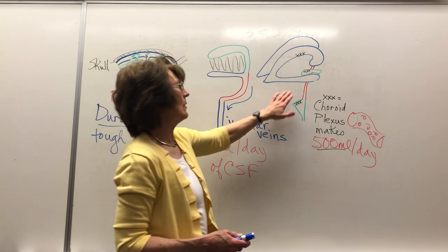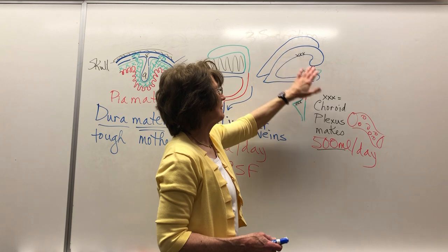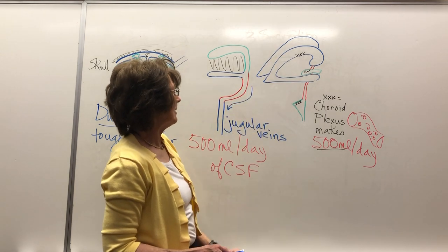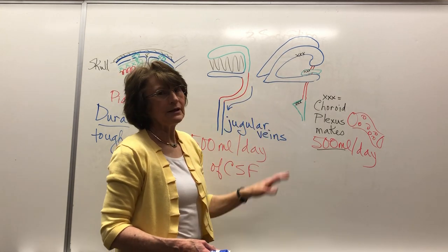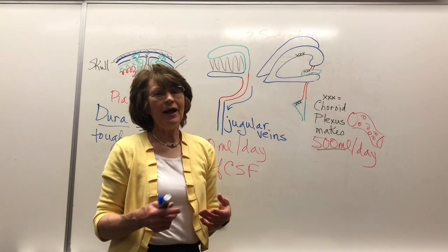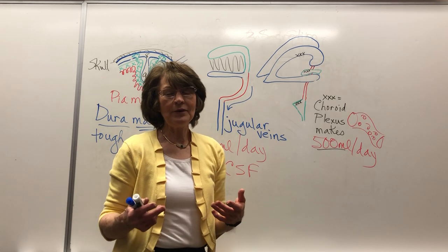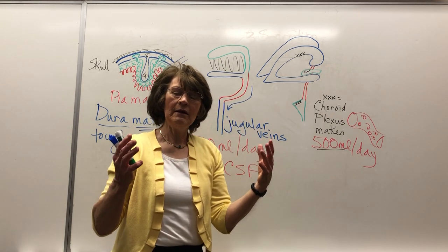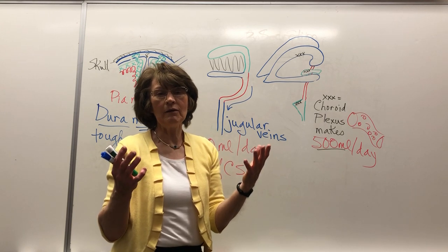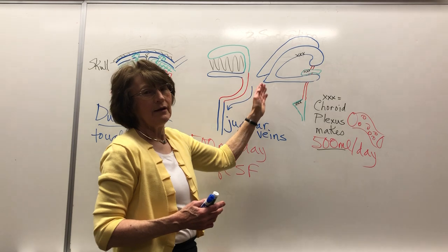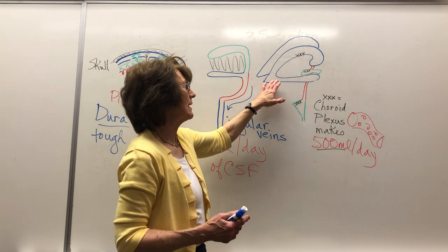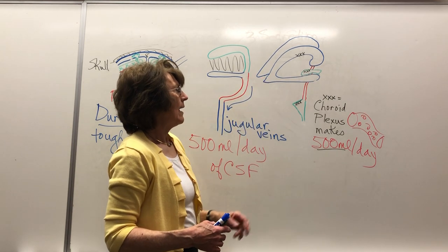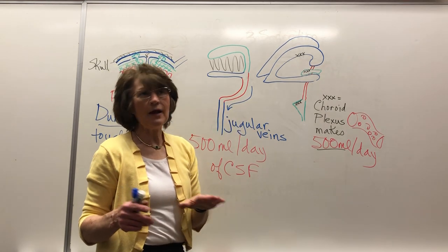When we look at this, notice there are choroid plexus locations in each ventricle: the third ventricle, the fourth ventricle, and the first and second. Now think about hydrocephalus — 'hydro' means water, 'encephalus' means brain. In a newborn whose skull can still expand, the skull will get enlarged. What can they do? They can put a shunt in, taking it down into the peritoneal cavity to allow the CSF to drain. That's what we're seeing with the ventricles of the brain.